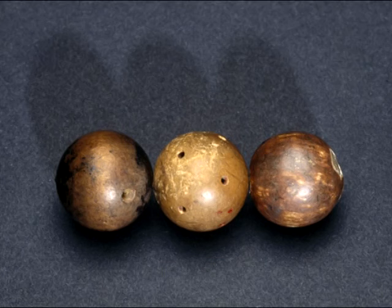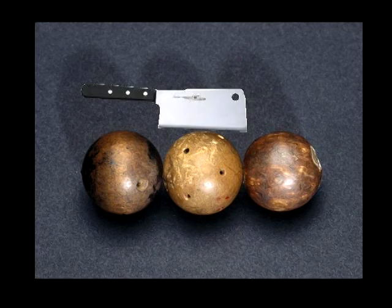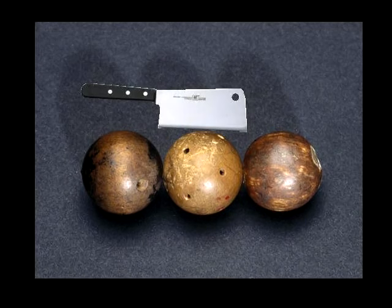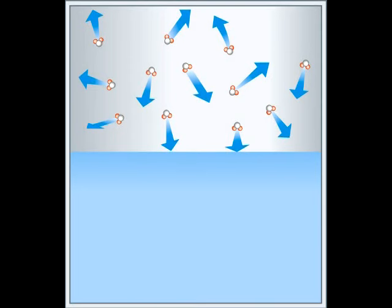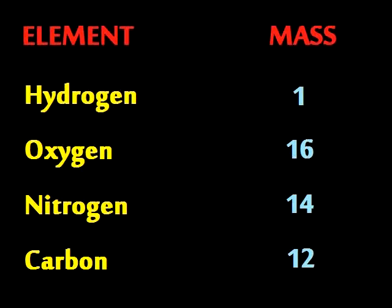1800, Dalton said the atom is a sphere. It cannot be divided any smaller, do not fear. He did a lot of work with pressure made by gas and said that atoms of each element had different mass.